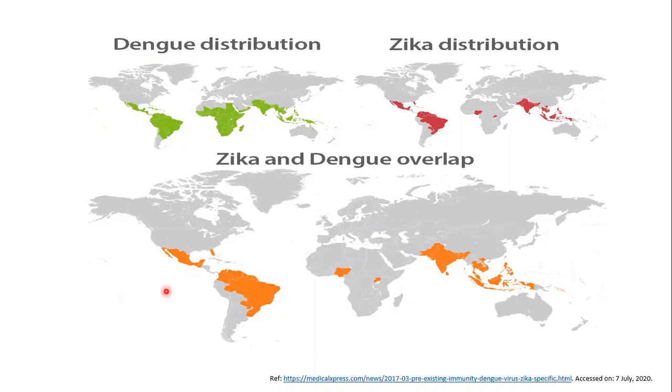And you can see that there are many regions around the world where both the Dengue and Zika virus overlap. So, our Dengue and Zika vaccines might have the capability to fight both these viruses at the same time simultaneously.